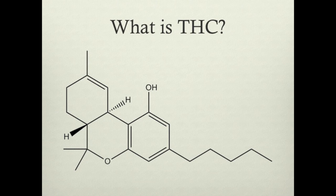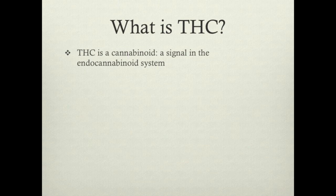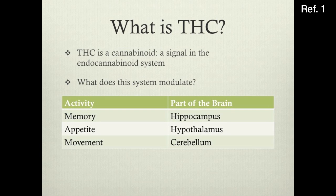To begin to answer this question, we must look at the regulatory system that THC is involved with and then examine its structure within this context. THC is a cannabinoid — a ligand that activates receptors and triggers signaling pathways in the endocannabinoid system, an important regulatory system in our body that modulates functions such as memory, appetite, and movement.